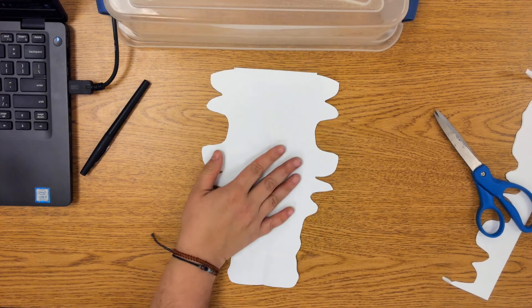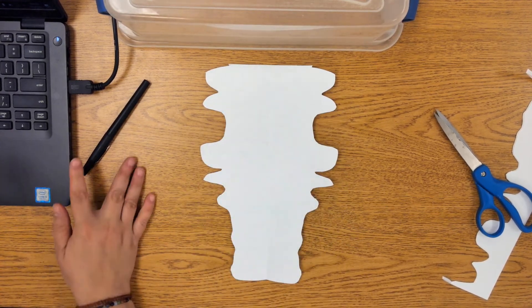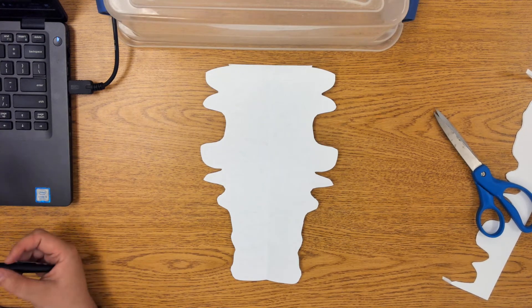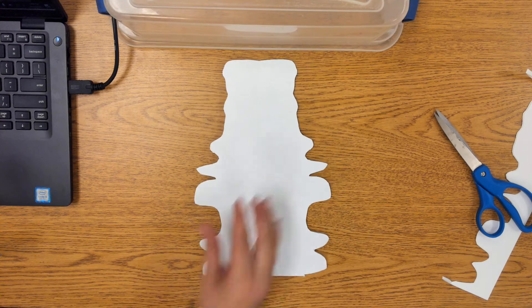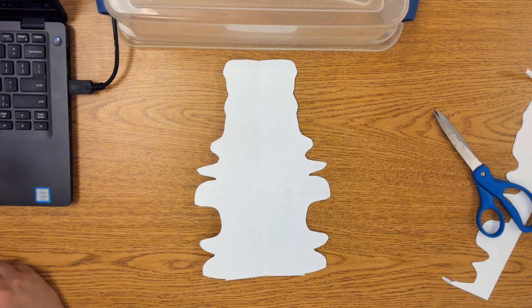This shape is going to become your alien or your creature that you're making. And you can decide - do you want it to go this way, or are you going to flip it upside down this way, whichever way you think will be best for it.